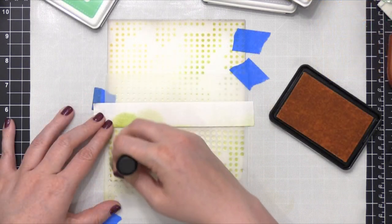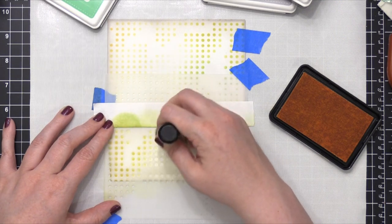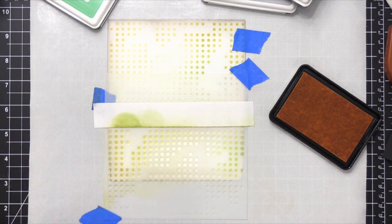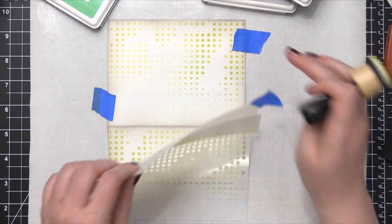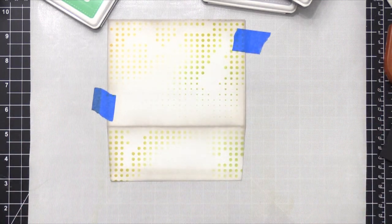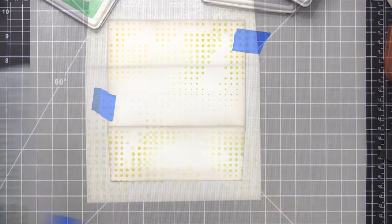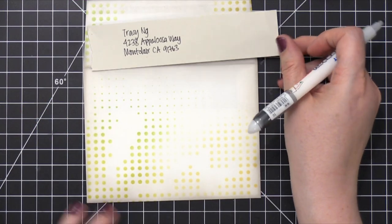I'm gonna stencil the flap of the envelope. I just rotated the envelope, taped it down again, and did some more stenciling and ink blending using the same colors. So here's the basic background of the envelope complete. Now I'm going to work on the address.